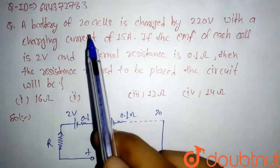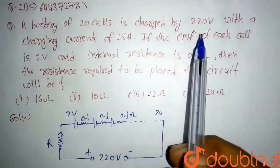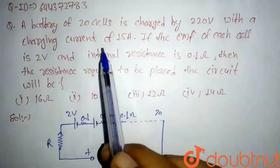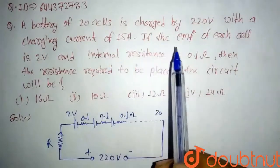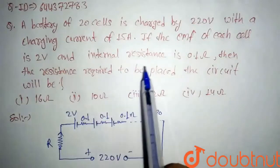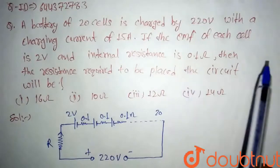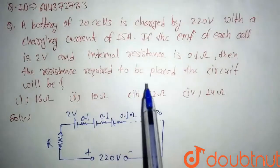A battery of 20 cells is charged by 220 volts with a charging current of 15 amperes. If the EMF of each cell is 2 volts and internal resistance is 0.1 ohms, then the resistance required to be placed in the circuit will be—assume that capital R is the resistance required to be placed in the circuit.